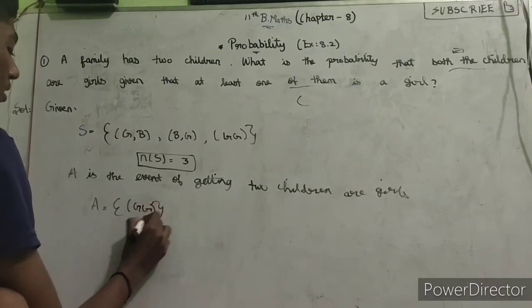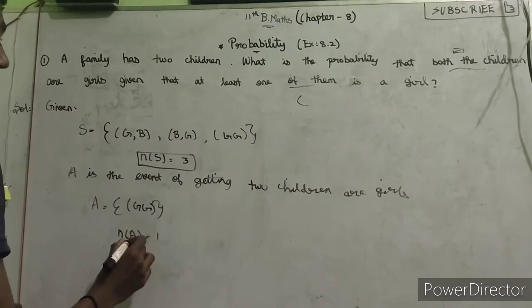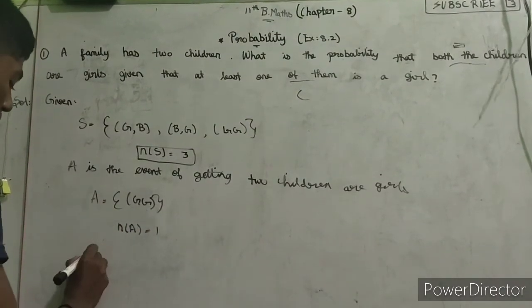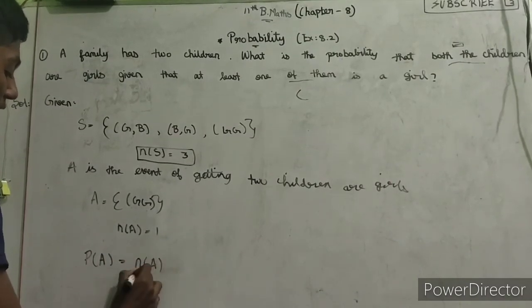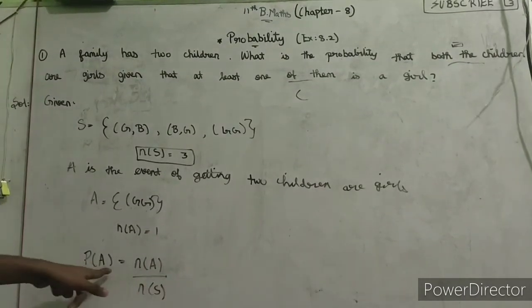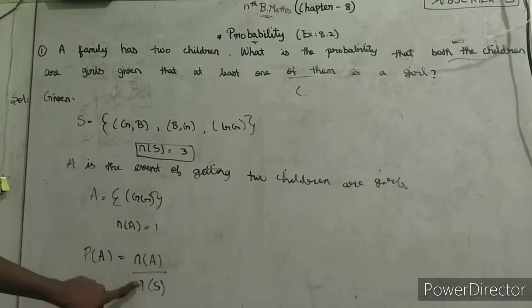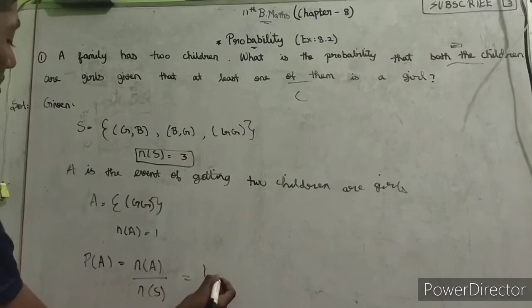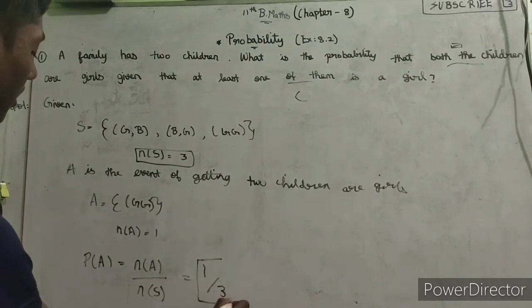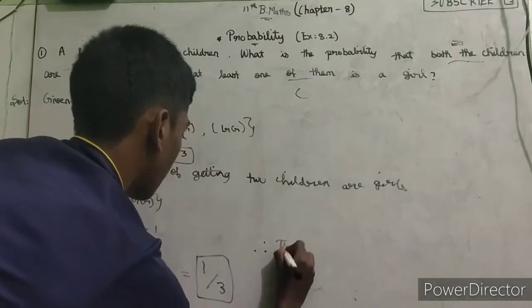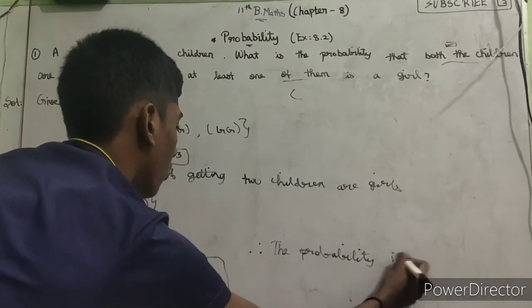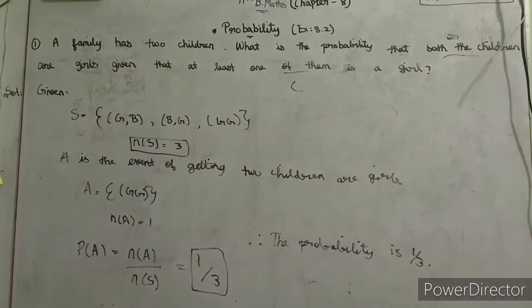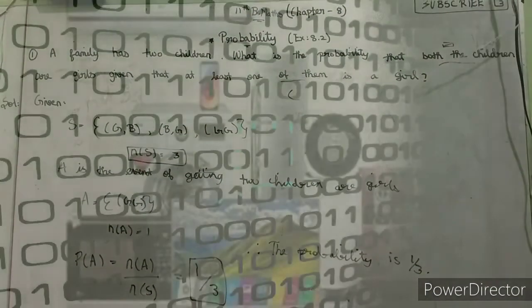Now the formula is P of A equals n of A by n of S. Similarly, P of B equals n of B by n of S. Here n of A is 1 and n of S is 3. Therefore the probability is 1 by 3. First sum done. Thank you friends.